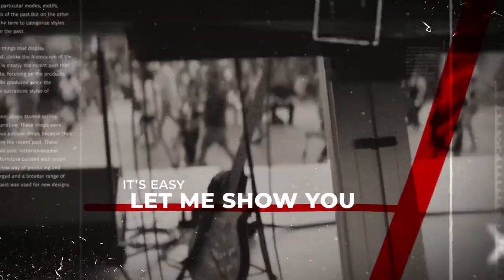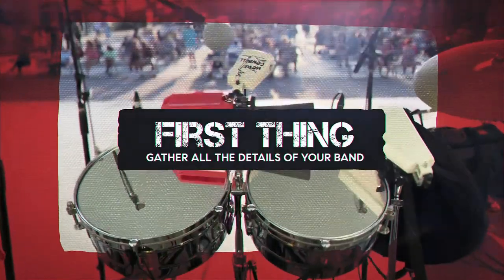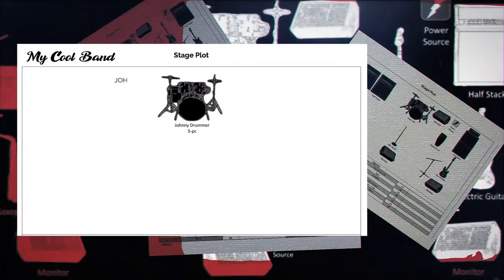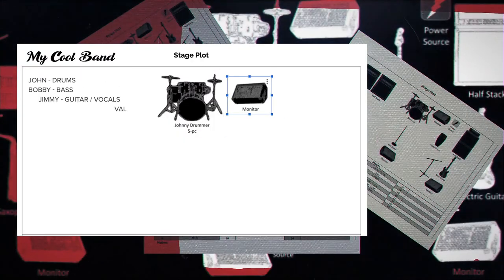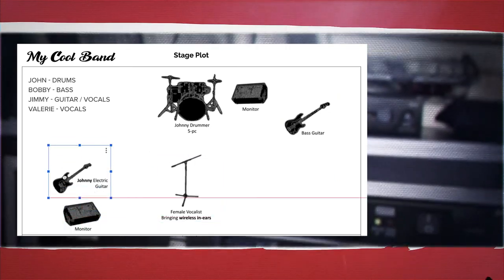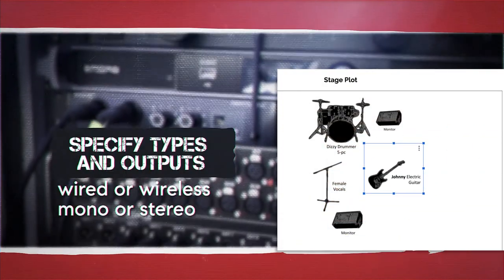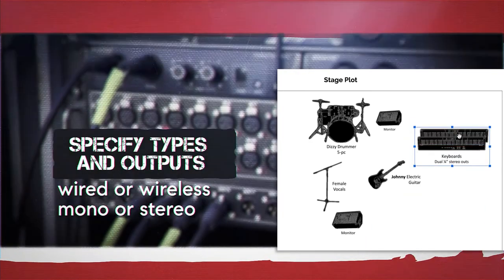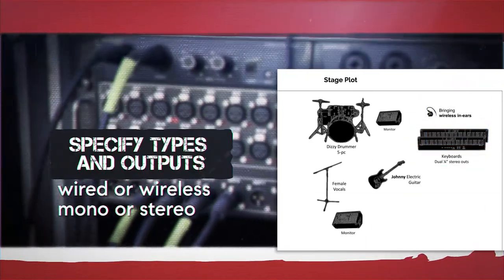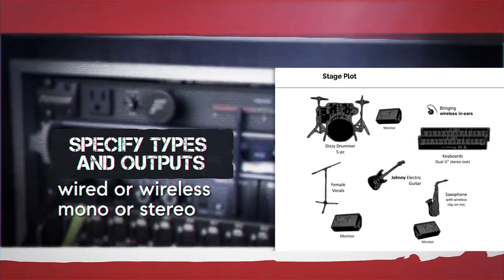It's easy to create a Stage Plot — you can do it yourself. First, gather the details of your band: everyone's name, where they go on stage, their instruments. Be specific, like a female vocalist bringing a wireless mic or needing a mic, dual keyboards with stereo quarter-inch outputs, a saxophone with a clip-on mic. You get the idea.